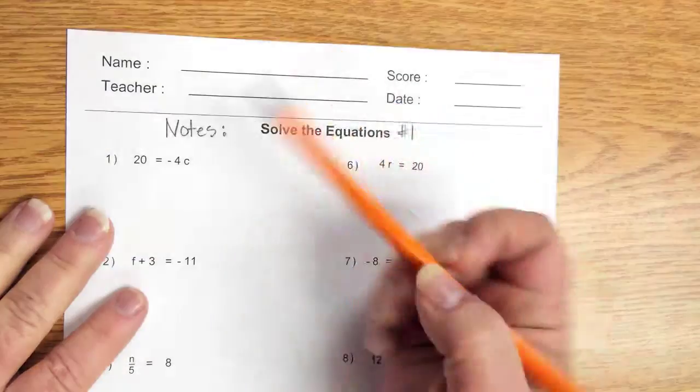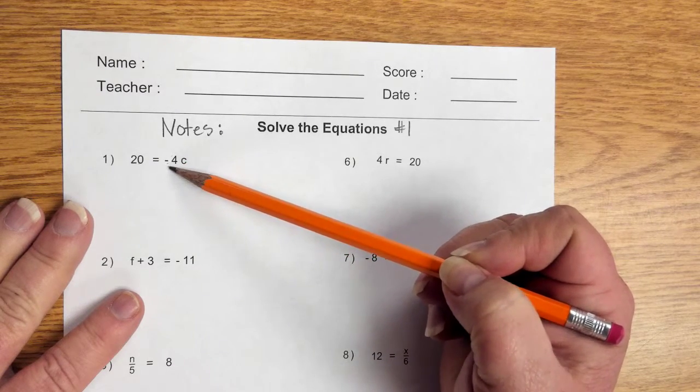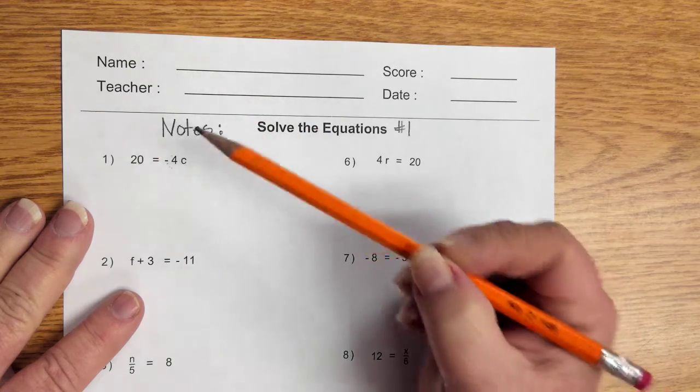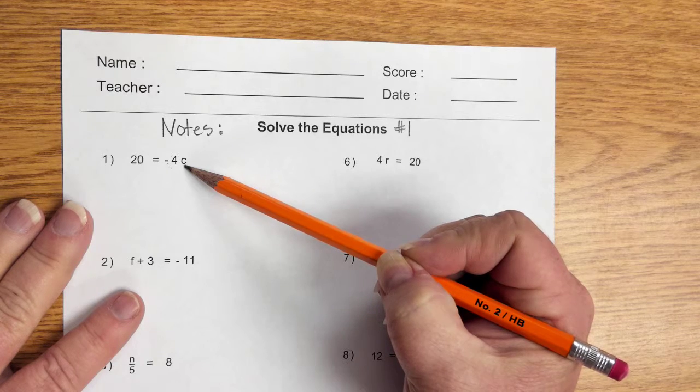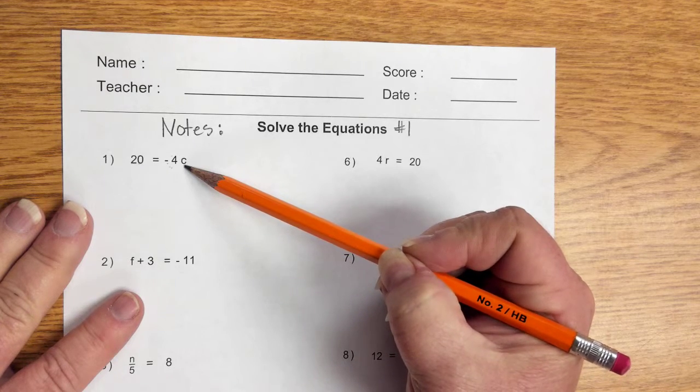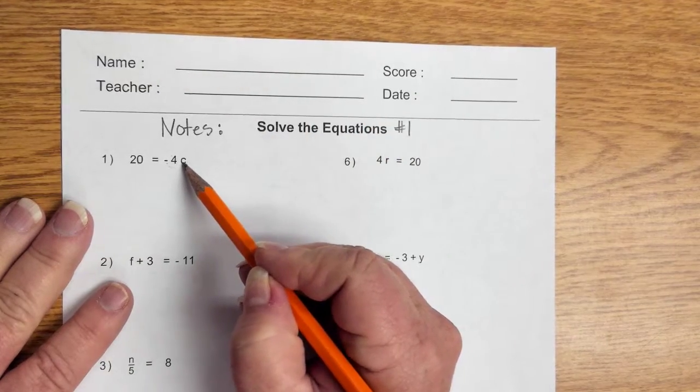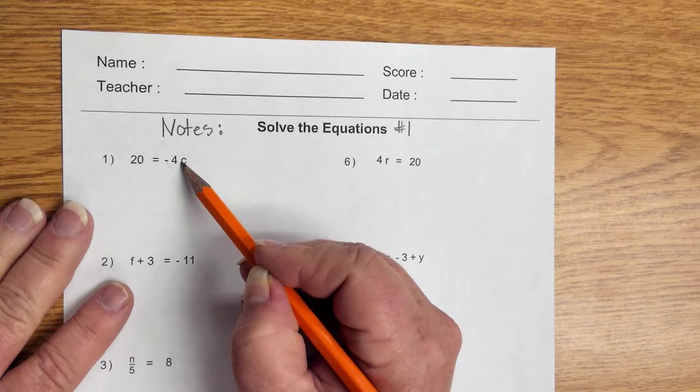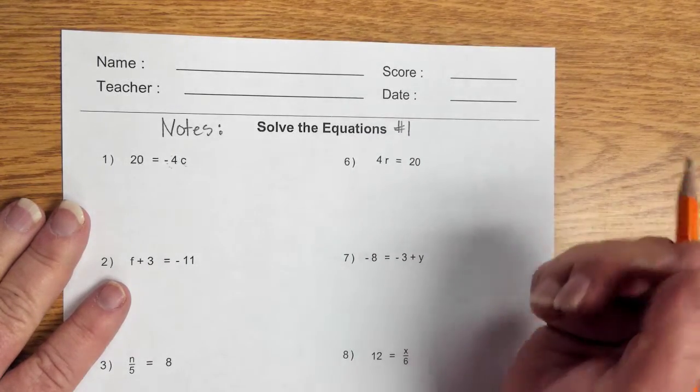First thing, you need to remember that you have two sides of the equal sign. And on an equation, what you do on one side, you have to do to the other side. The goal is to get c by itself, or get one c. And it must be left positive, not negative. So, what I have here, because the 4 is right next to the c, that is multiplication. We undo multiplication by the opposite operation, which is division.